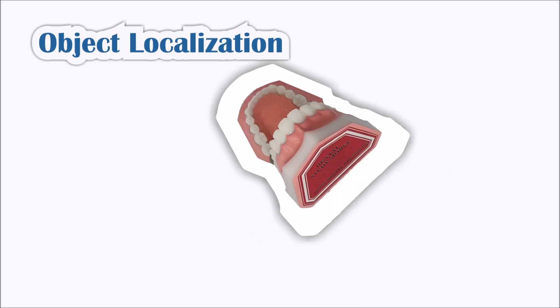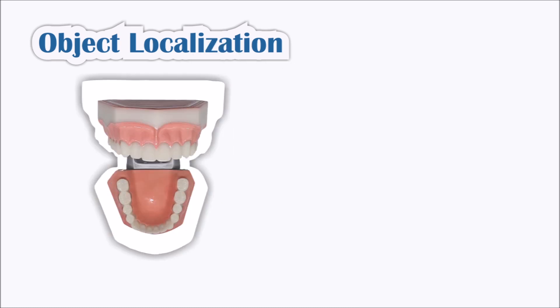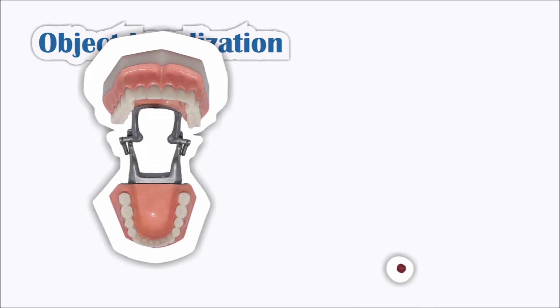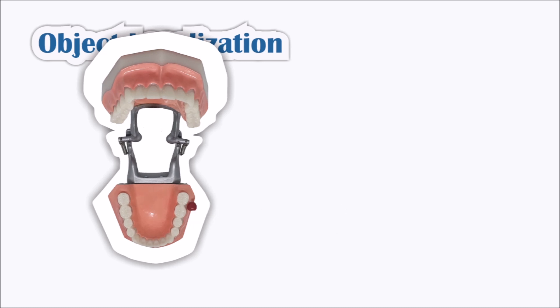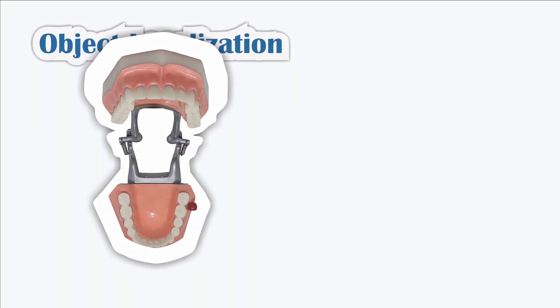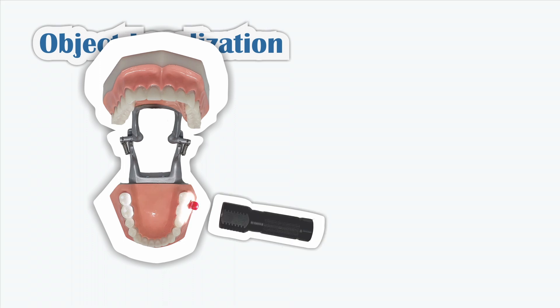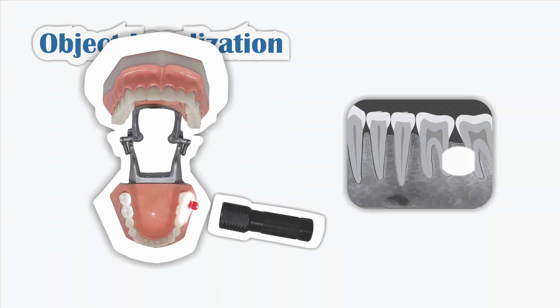To explain this, here we have a dental study model, and we have a red rounded object which stands on the first condition, lying on the buccal of the teeth. We have a flashlight to visualize the x-ray tube head. When we expose the object with x-ray, the image on the radiograph will be like this illustration.